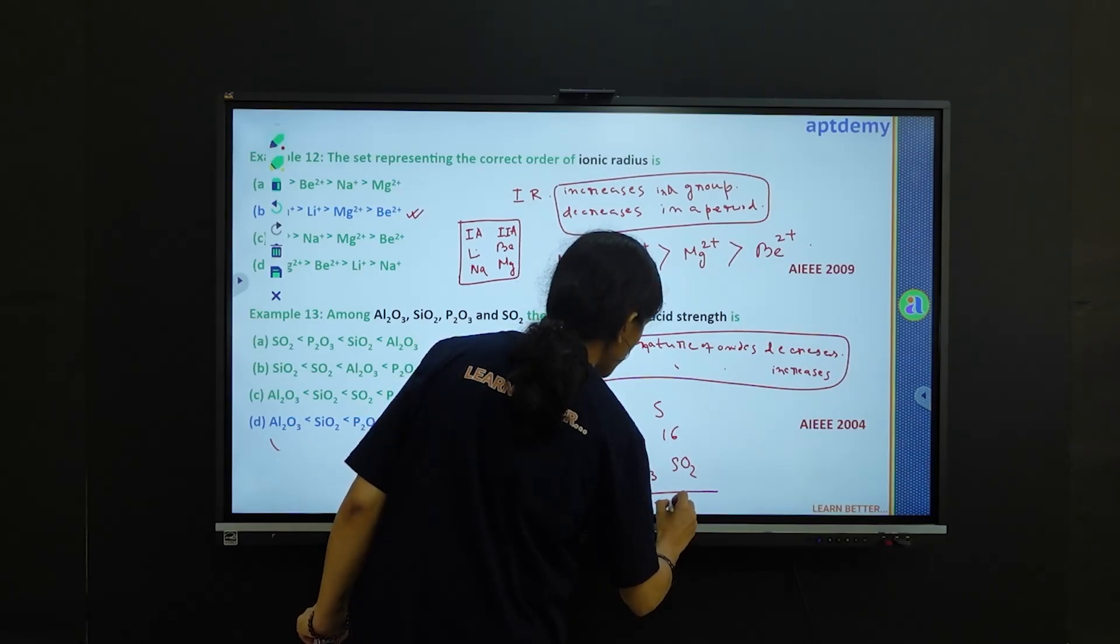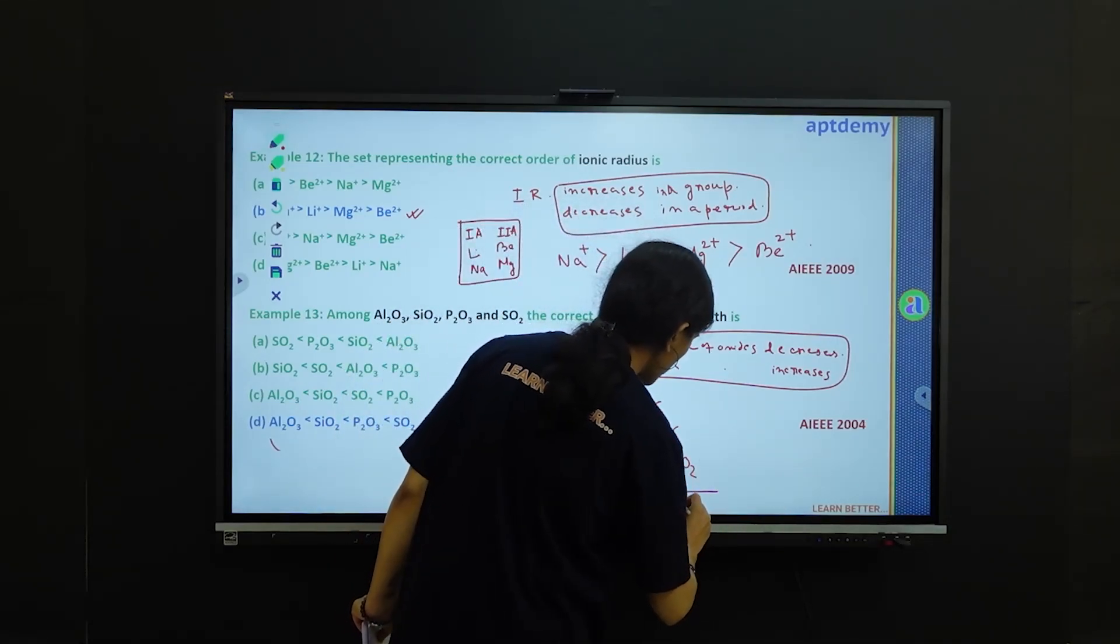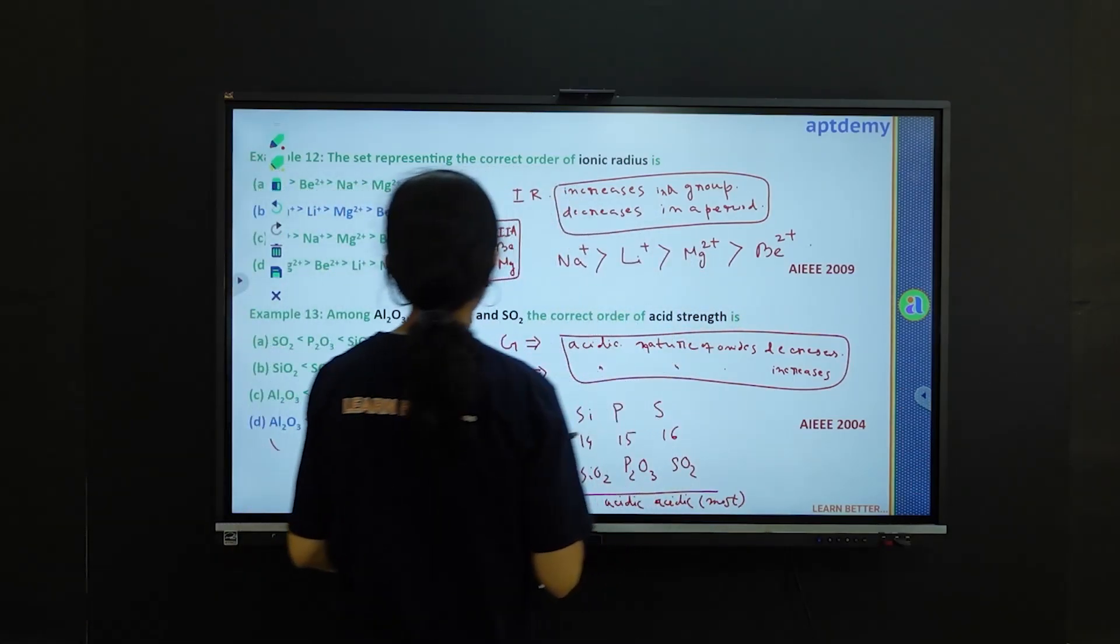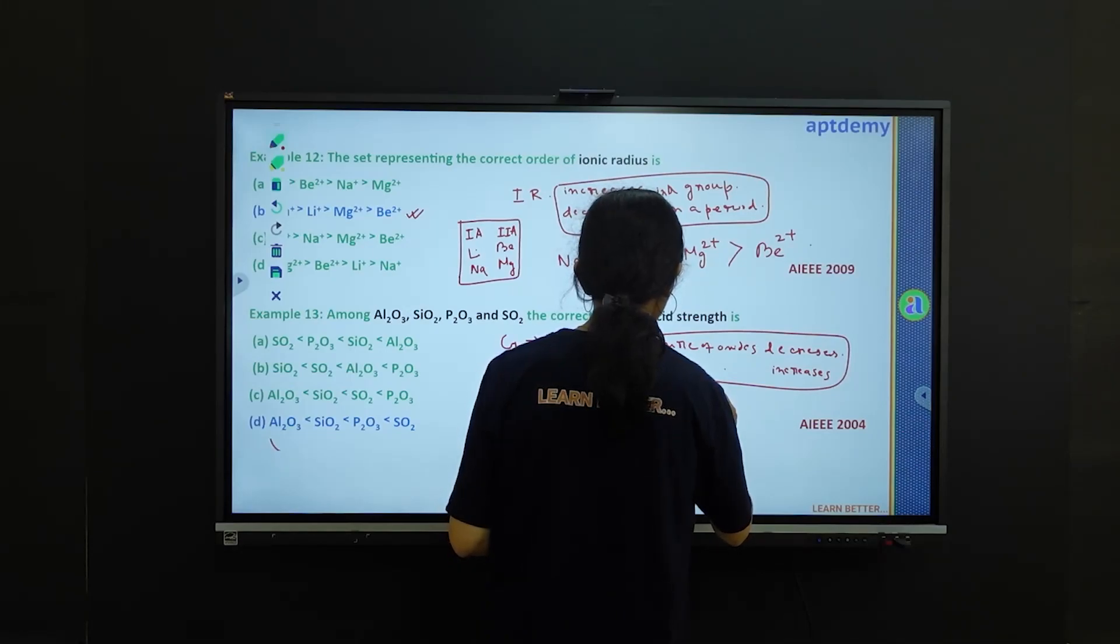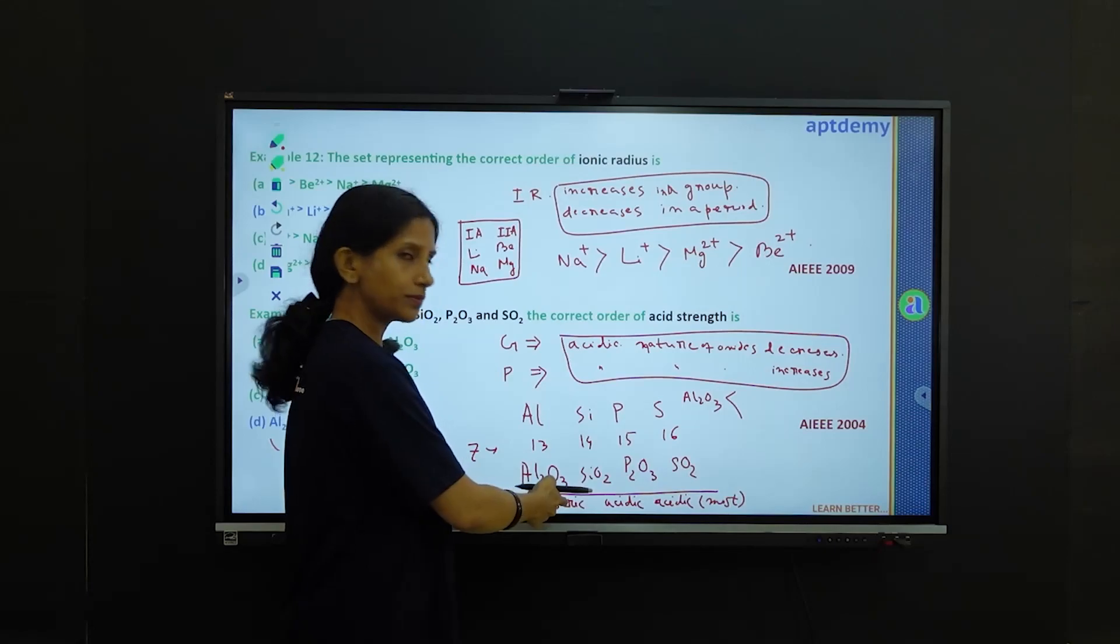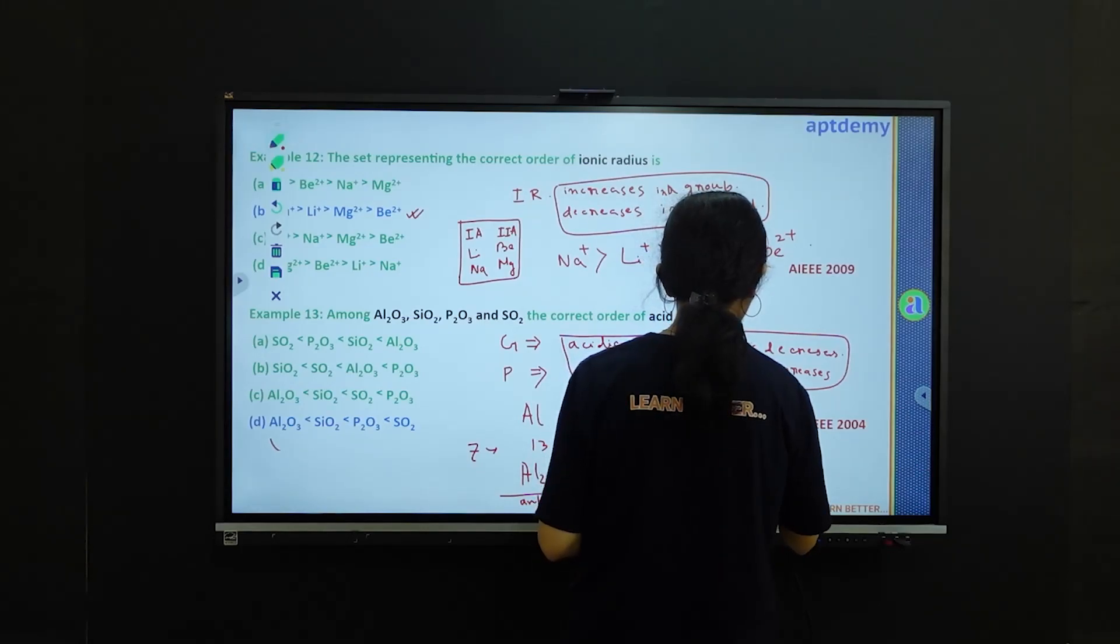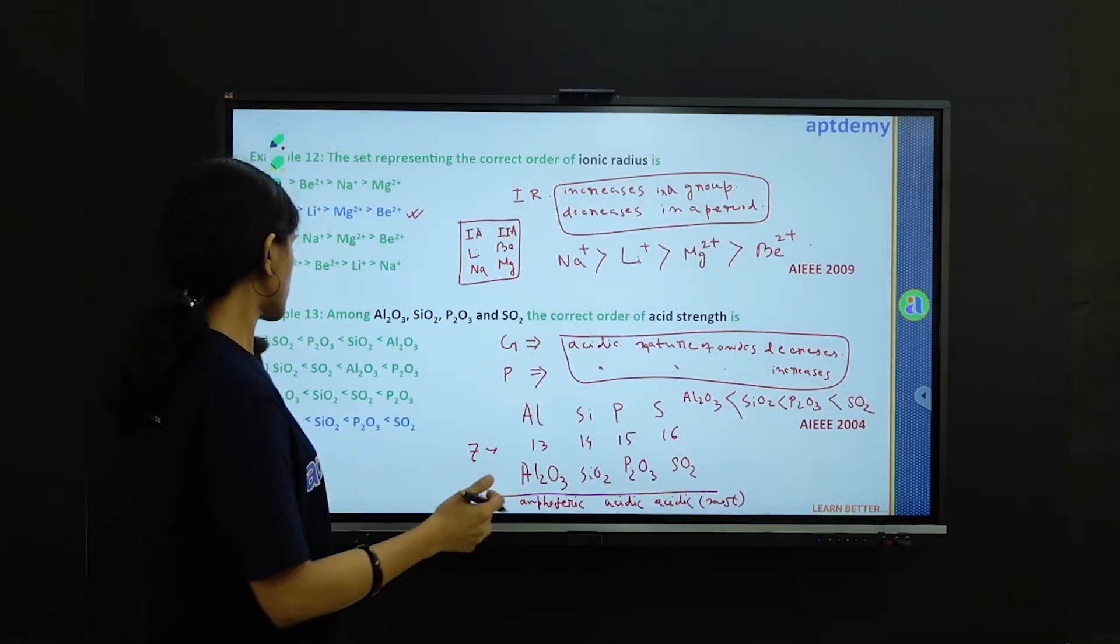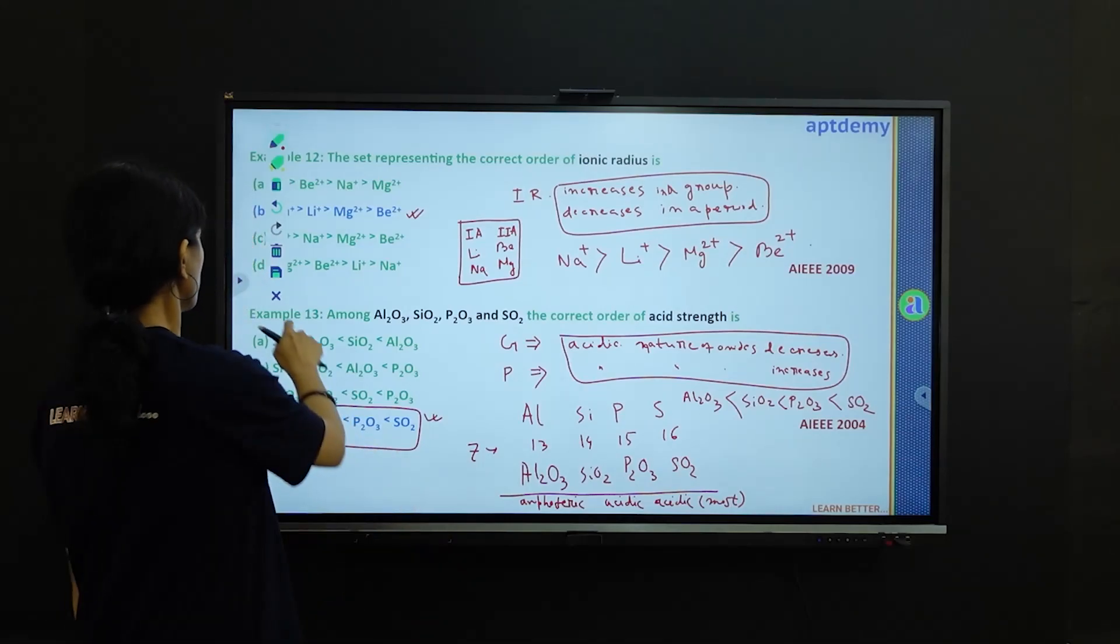So most acidic oxide would be at the maximum right side. So now if you arrange, you will get the correct order of the acid strength would follow: Al2O3 would not be acidic, it is having amphoteric nature, and then comes SiO2, then comes P2O3, and then SO2 is having the maximum acid strength or most acidic. So if you check the options, option B is the correct option.